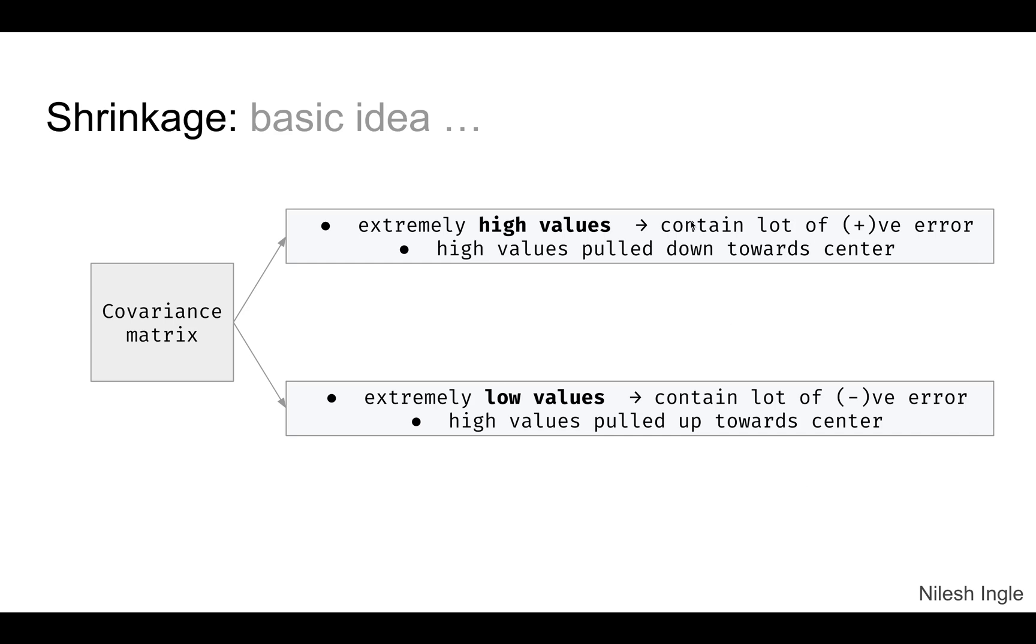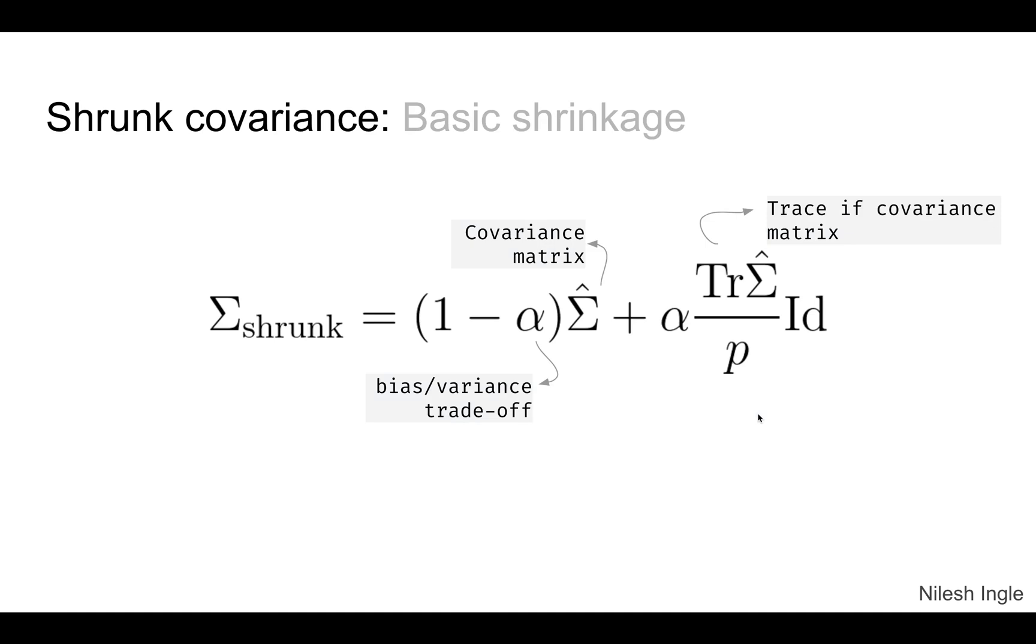So the basic idea in shrinkage or regularization is to add weights to these values or completely remove them. One of the ways is to pull down the high values towards the center or pull up the extremely low values towards the center. There are different methods implemented in scikit-learn. The very first one is basic shrinkage and it is given by this particular function right here where we have the alpha coefficient that controls the shrinkage and that is the bias variance trade-off.